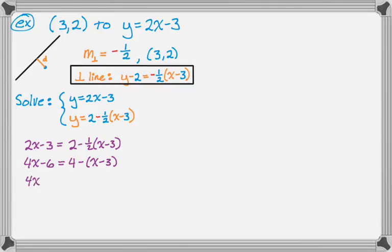I'm going to clear the parentheses on the right-hand side. Don't forget to distribute the negative. Now I'm going to add x to both sides and add 6 to both sides. So I get 5x equals 13. So x is 13 fifths.